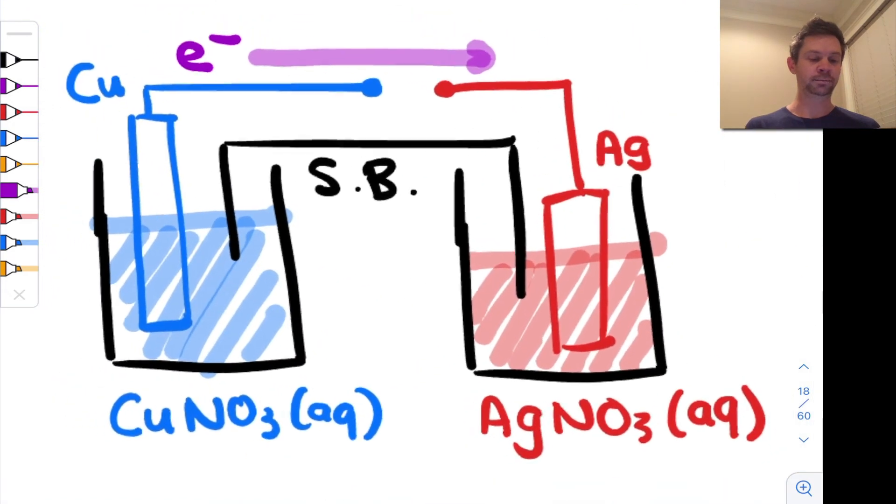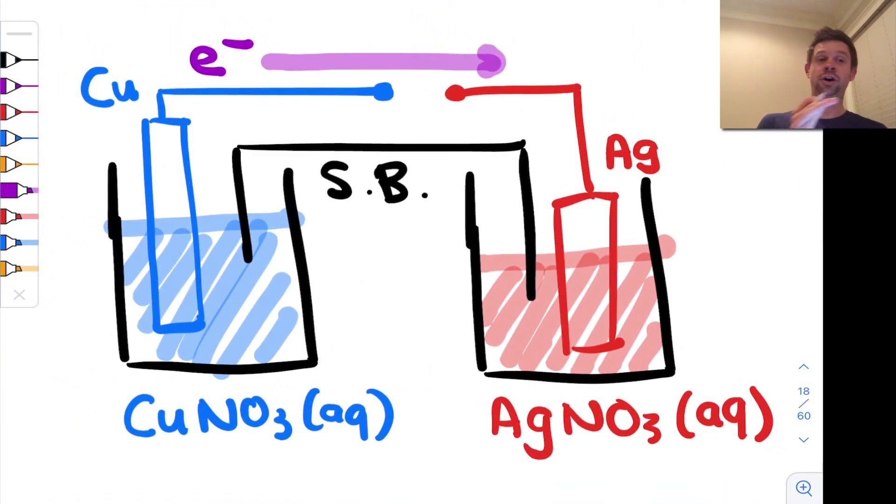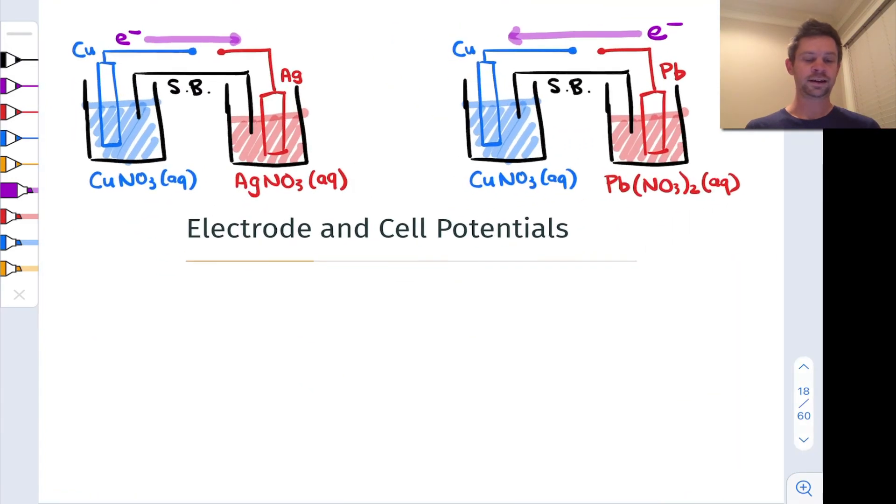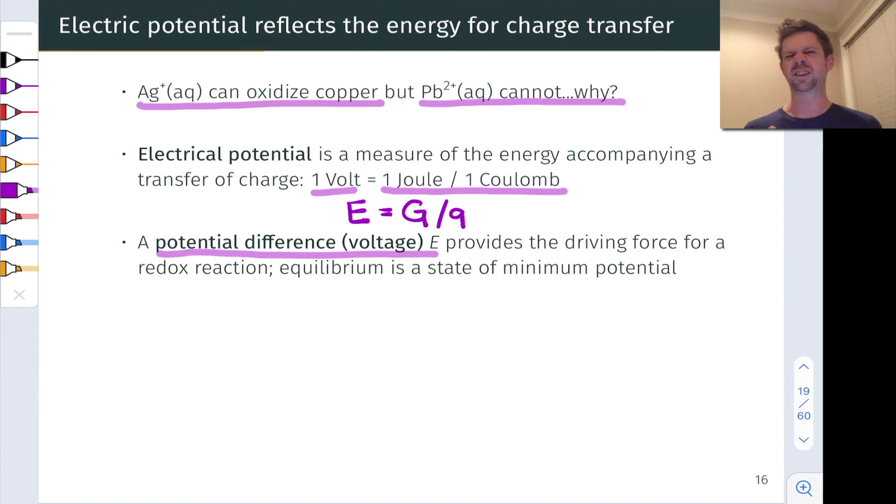When the two half cells are in equilibrium such that there is no net flow of electrons from the left to the right or the right to the left, well in that case the electrical potentials of the half cells are equal and so the potential difference is equal to zero. We'll return to this point later as well.